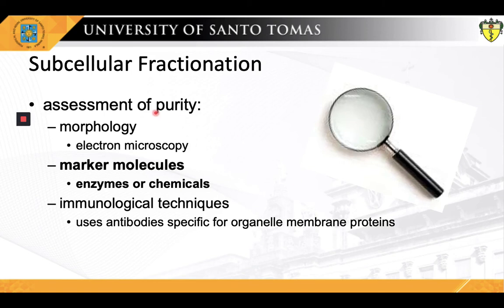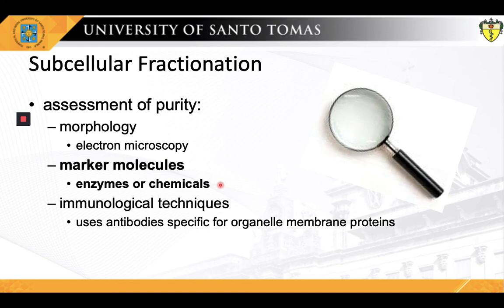There are various ways in determining the purity of the organelles isolated from subcellular fractionation. This may involve processes that are not only tedious but expensive and inconvenient as well, like electron microscopy. Additionally, several immunological techniques can be used with specific antibodies specific to the different organelle membrane proteins. However, what proved to be the most convenient and least expensive process to assess organelle purity is the use of certain marker molecules. Marker molecules are certain substances, be they biomolecules or enzymes, that are specific for an organelle. A very good example is testing for DNA in order to determine if the organelle extracted and isolated was indeed the nucleus.